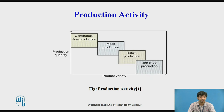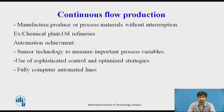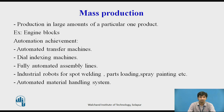How is automation achieved in different types of production? In continuous flow production — manufacturing or processing materials without interruption, for example a chemical plant or oil refinery — automation is achieved through sensor technology to measure important process variables, use of sophisticated control and optimized strategies, and fully computer-automated lines. In mass production — production in large amounts of a particular product, for example engine blocks — automation is achieved through automated transfer machines, dial indexing machines, and fully automated assembly lines.